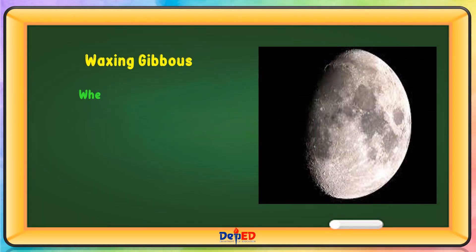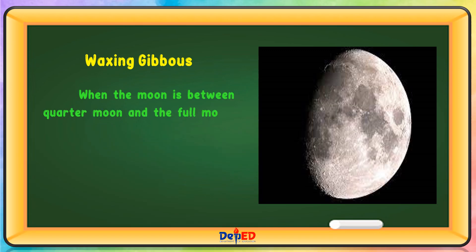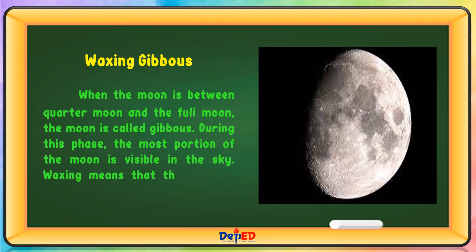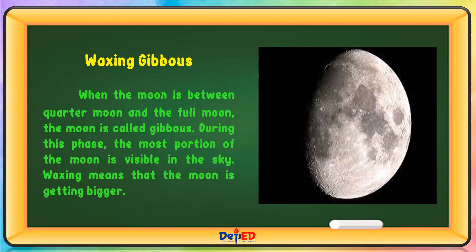Waxing Gibbous Moon — When the Moon is between quarter moon and the full moon, the Moon is called gibbous. During this phase, the most portion of the Moon is visible in the sky. Waxing means that the Moon is getting bigger.